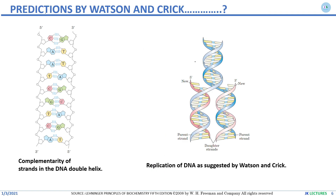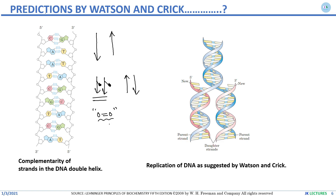Watson and Crick also predicted that the two strands are antiparallel in nature. During their project work they modeled the helix in both parallel and antiparallel configurations. In the parallel arrangement, nitrogenous bases were adjacent rather than opposite, preventing hydrogen bond formation. In the antiparallel arrangement, bases were properly positioned to form hydrogen bonds, so this model was accepted.